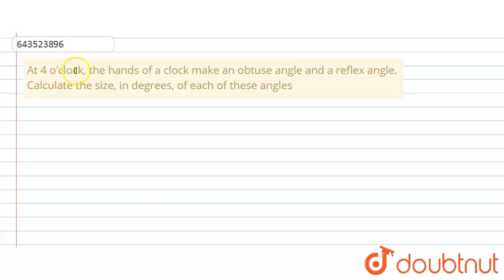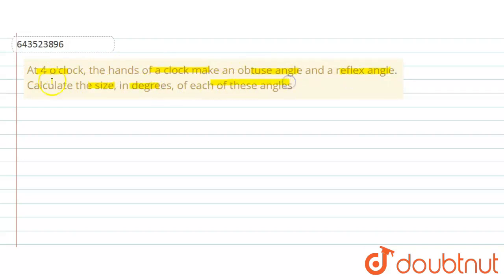Hello everyone. The question says: at four o'clock, the hands of a clock make an obtuse angle and a reflex angle. Calculate the size in degrees of each of these angles.